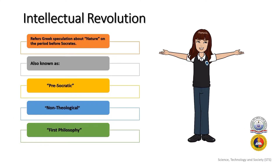Let us first talk about the intellectual revolution. This topic has been discussed in the previous lessons, but we will just have a recap about it. The term intellectual revolution is used to refer to Greek speculation about nature in the period before Socrates. Hence, the alternative technical terms are pre-Socratic, or non-theological, or the first philosophy.